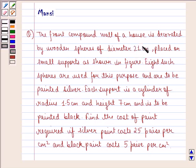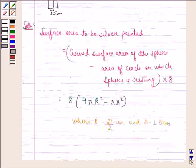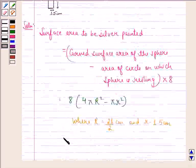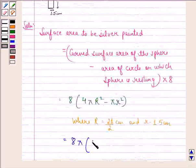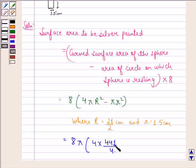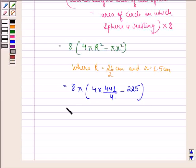So we simply put in the values here and we get 8π into 4 into 441 by 4, because square of 21 is 441, minus 2.25. This will be equal to 8π into 438.75 cm².